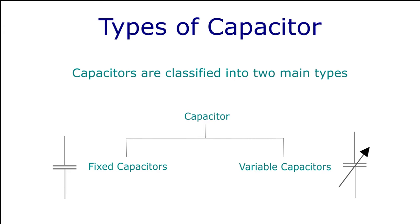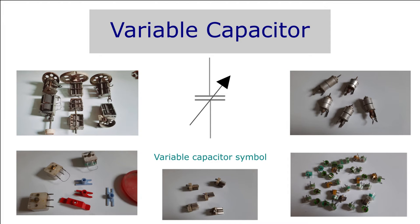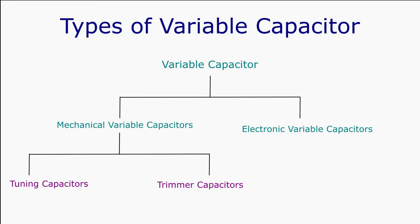Capacitors are classified into two main types: one, fixed capacitors, and two, variable capacitors. A variable capacitor has a capacitance value that changes when it is varied either mechanically or electrically. A variable capacitor consists of intermeshed sets of metallic plates where one is fixed and the other is variable. The schematic symbol for a variable capacitor is given.